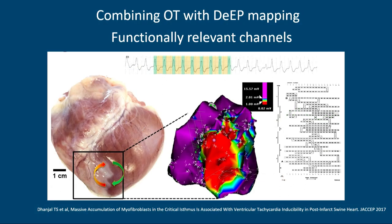We've used omnipolar technology considerably in decrementing potential mapping. This builds on work in an in vivo swine model. Bill Stevenson showed De Barca's schematic describing zigzag lines of myocytes as the reason for slow conduction. What our work showed—and De Barca wrote the editorial—was a critical accumulation of myofibroblasts at the VT exit sites. These cells act as current sinks, drawing current from myocytes and potentiating slow conduction. In the EP lab, we are trying to determine the electrical signature of this abnormal cell-cell coupling.